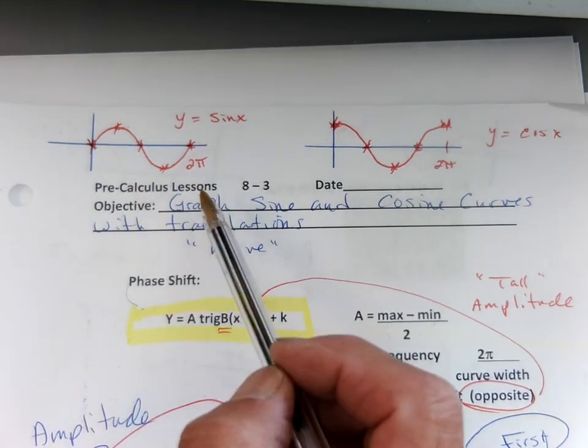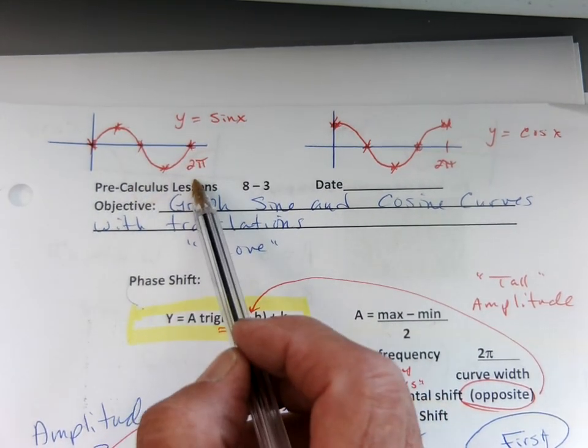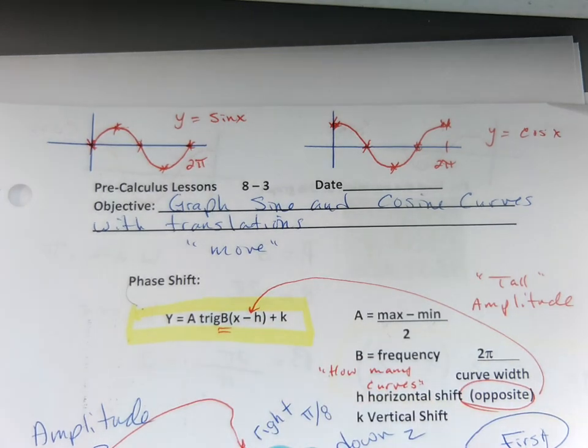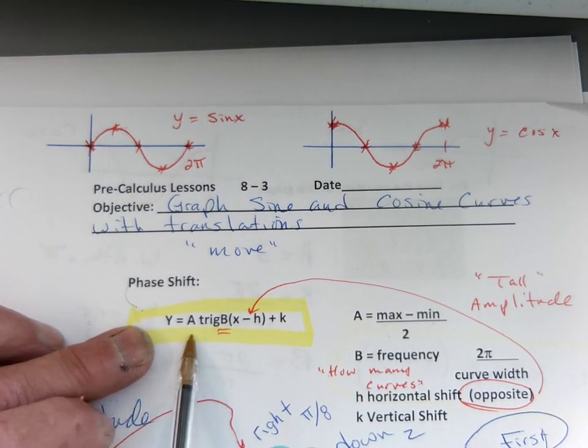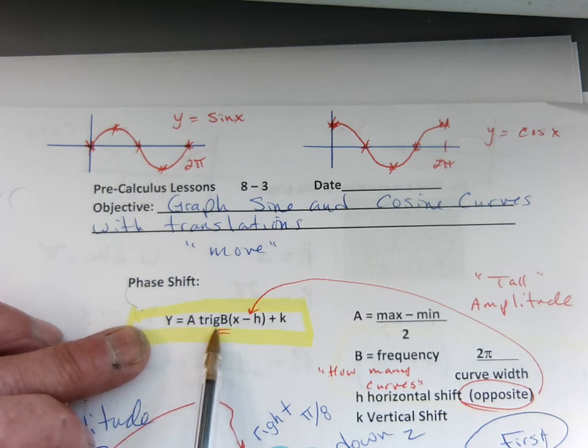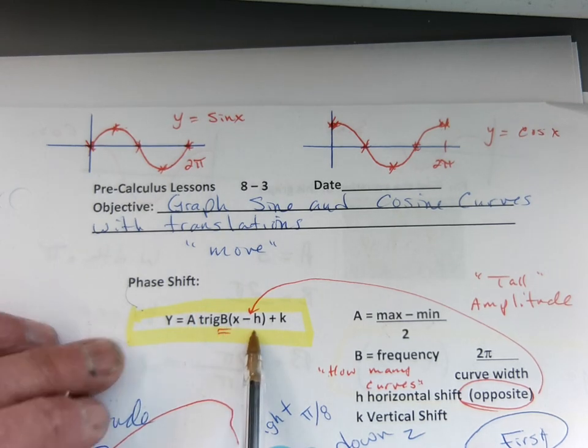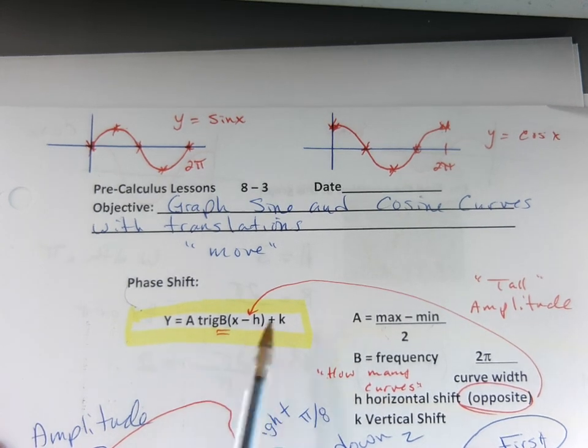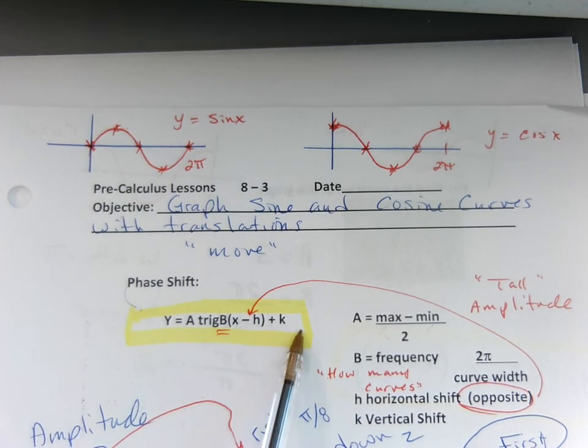We did an amplitude shift and a period change yesterday, but today we're going to actually move them. So if I use this general formula, y equals a trig (sine or cosine), b (b is a frequency), x minus h. Now h is the horizontal shift, always minus because it's the opposite direction, plus k, up or down.